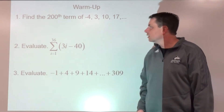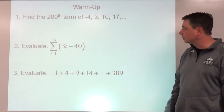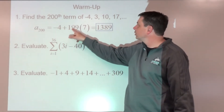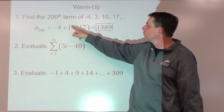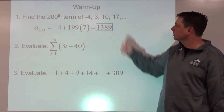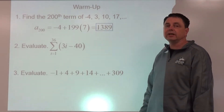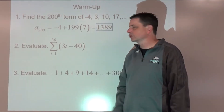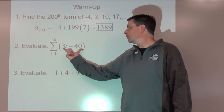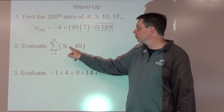Number one is looking for a term, so that's our a-sub-n formula: a-sub-n equals the first term plus n minus 1 times d, and we get 1389. Number two is going to be an arithmetic partial sum — we know that because our a-sub-n is a linear expression that looks like mx plus b.